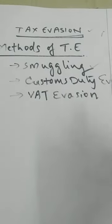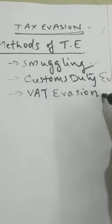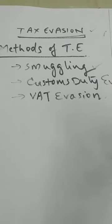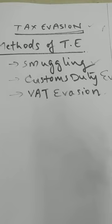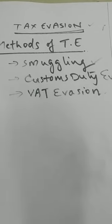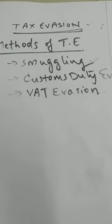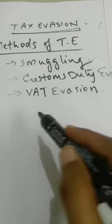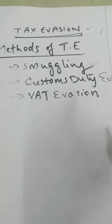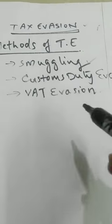VAT evasion means Value Added Tax evasion. It is done by showing a lower sales amount than the actual sales, to escape from the payment of VAT. This is what we call VAT evasion or Value Added Tax evasion. This is another way some people follow to evade tax.